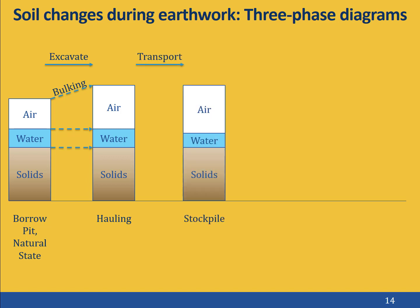After the dump truck is full, it transports its load of soil to the stockpile area where it is dumped or sorted into one or more stockpiles. The total volume of the soil doesn't change significantly from transport to being stockpiled, and certainly the volume of solid material doesn't change. The water content, however, may or may not change while the soil is stockpiled. If the weather is hot and dry, water may evaporate from the soil, reducing the water content. If there is precipitation, the amount of water may increase. We don't really know for sure how the water content will change — it depends on the weather and how long the soil is stockpiled.